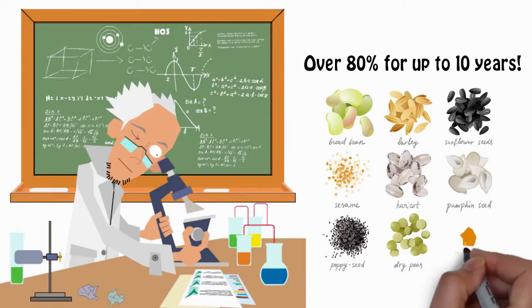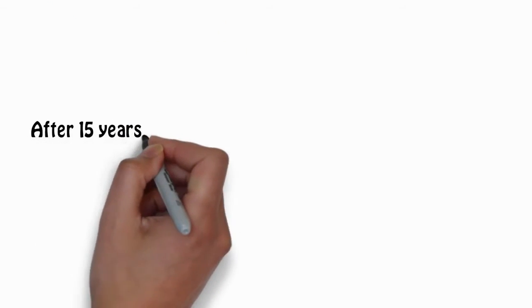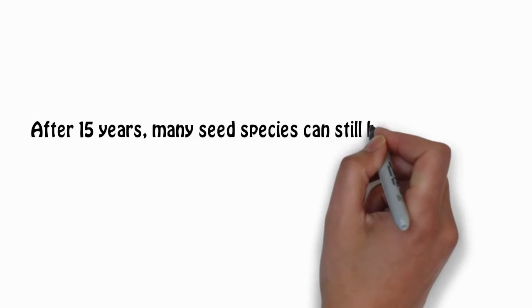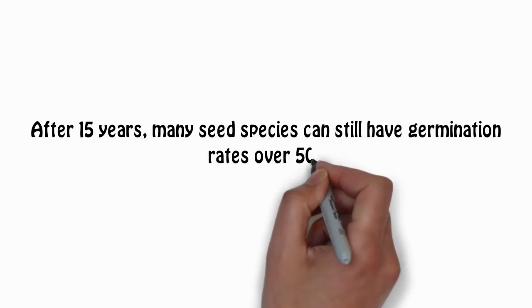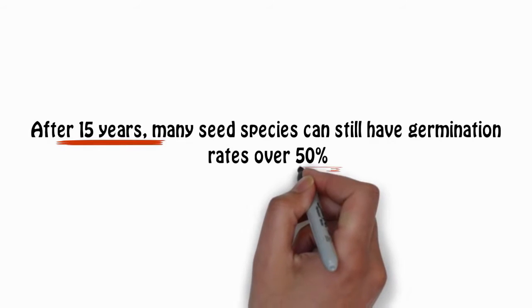The germination rates of properly dried seeds will begin to decline like all seeds, but they decline much more slowly than regular crop year seeds. After 15 years, many seed species can still have germination rates over 50%.